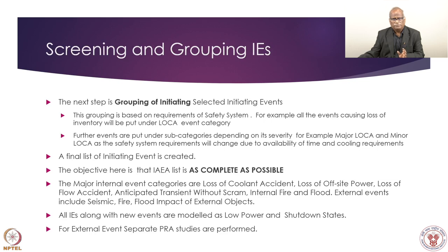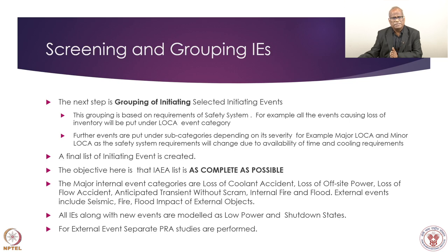After screening, the events are grouped - the grouping activity saves effort and brings clarity. Events of a similar type that need similar treatment are grouped together. For example, in loss of coolant accident there are 4 or 5 categories. If the safety system response required is the same - meaning the same event tree header events will work - they can be put under one group. Grouping is based on safety system requirements and severity. For leakage-type events there can be two categories: minor LOCA and major LOCA. The response of the safety system required will be different - minor LOCA requires certain systems while major LOCA requires additional systems with different timing.